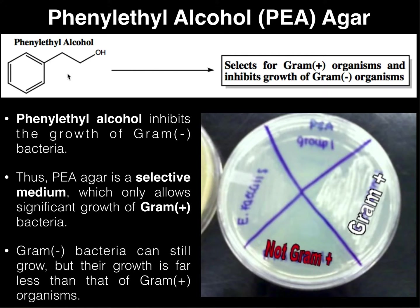What this chemical does is it inhibits the growth of gram-negative bacteria. So if you were to plate gram-negative bacteria such as E. coli on PEA agar, you would not expect to see a significant amount of growth — there may be a marginal amount, but not to any significant extent. However, if you plated a gram-positive bacteria such as Staphylococcus aureus, you should expect a large amount of growth.